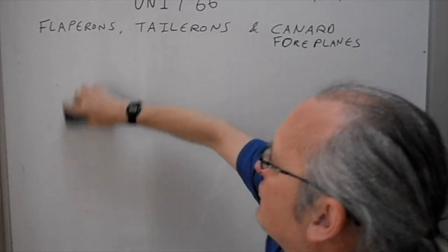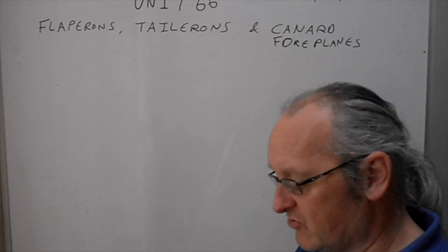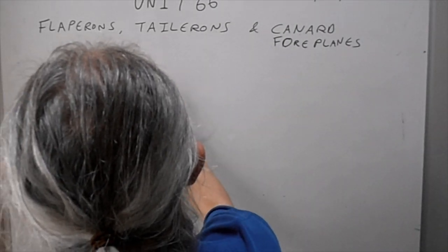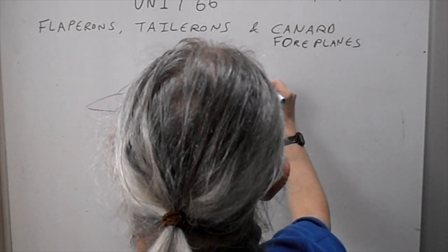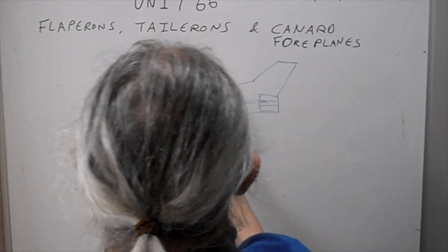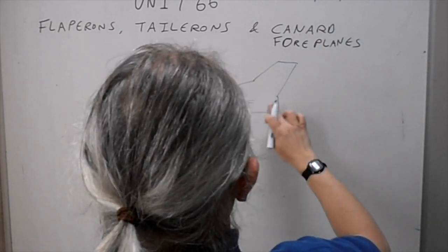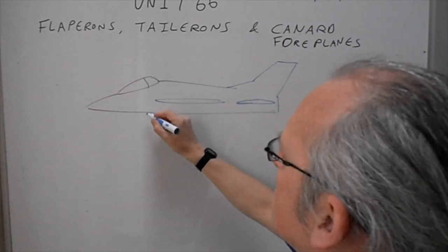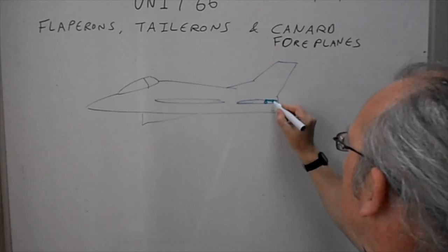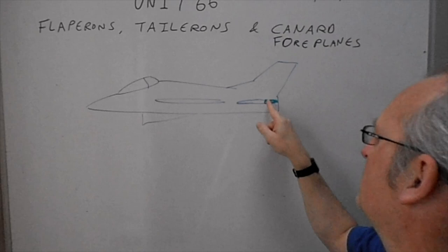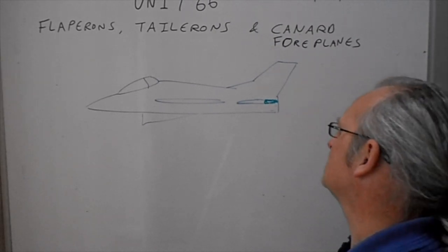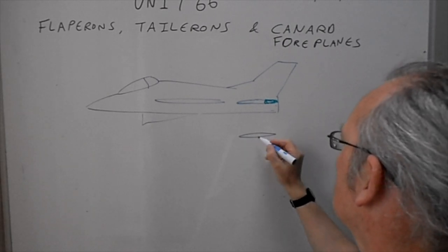Now we're going to talk about tailerons. On the back of an aircraft — I'm going to compare two airplanes. I'll draw an F-16, and this could be an F-15 or anything without canards. With a standard tail configuration on the F-16, you would have elevators — you'd only be using the last part of the control surface for control. That would be the pivot, and you'd use these for roll and these for pitch.